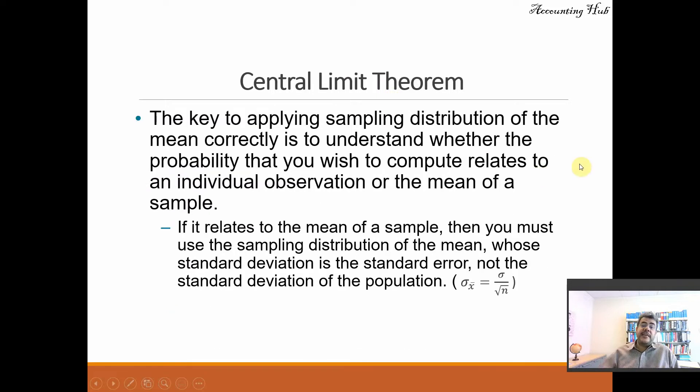And the key to applying sampling distribution of the mean correctly is to understand whether the probability you wish to compute relates to an individual observation or the mean of a sample. If it relates to the mean of a sample, so we are working with the mean of the sample, not only one individual observation, then you must use the sampling distribution of the mean.